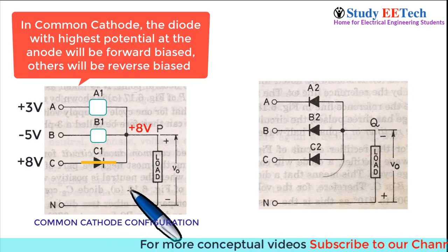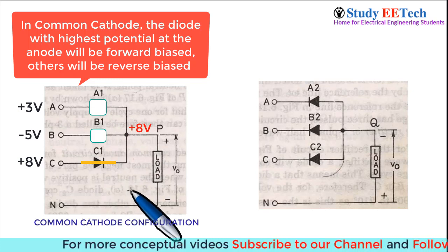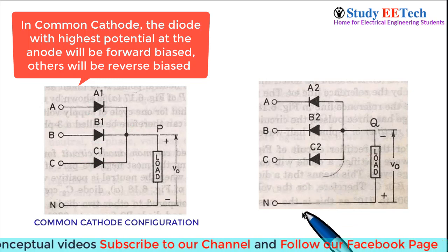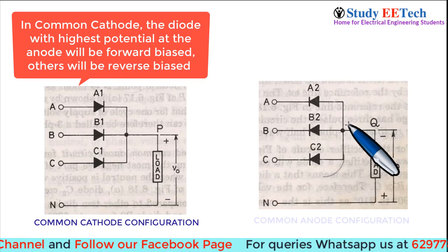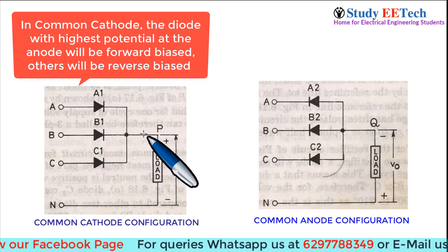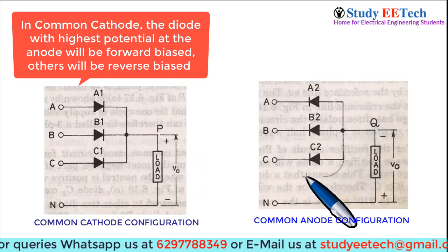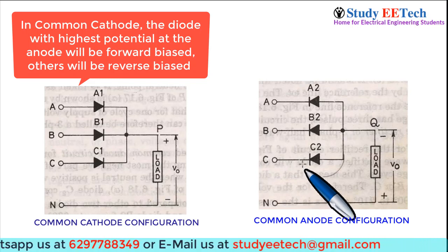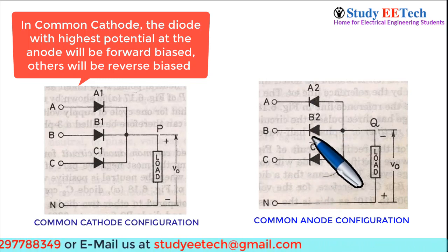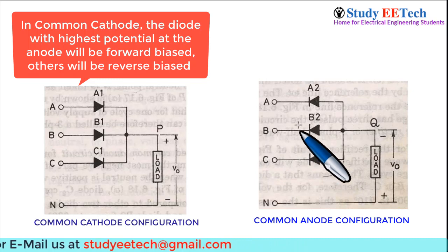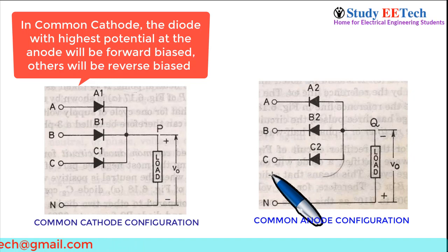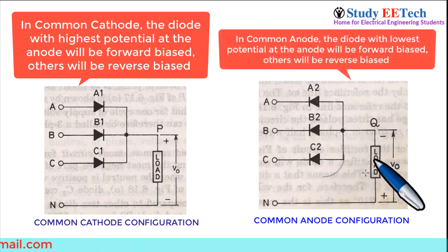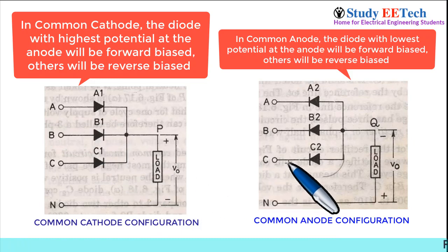We can conclude that in common cathode configuration, the diode having the highest potential at its anode will be forward biased, and all others will be reverse biased. Similarly, applying the same logic to the common anode configuration, we can conclude that the diode having the least potential at its cathode will be forward biased. Remember this point — it is very important to understand the three-phase circuit.